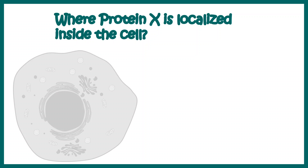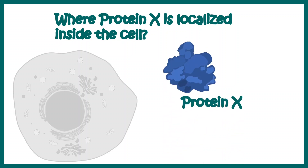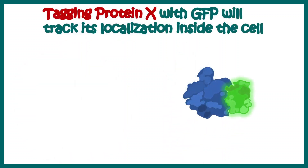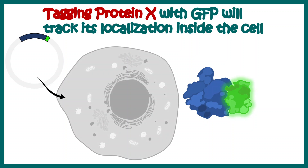Let's say we are a biomedical researcher and we want to know where a particular protein of interest — in this case protein X — is localized inside the cell. We can tag protein X with GFP, and this is possible with the help of recombinant DNA technology. We would be cloning the coding region for protein X along with the GFP sequence and then clone it into an expression vector, and then transfect the expression vector inside a cell where we want to see its subcellular localization.